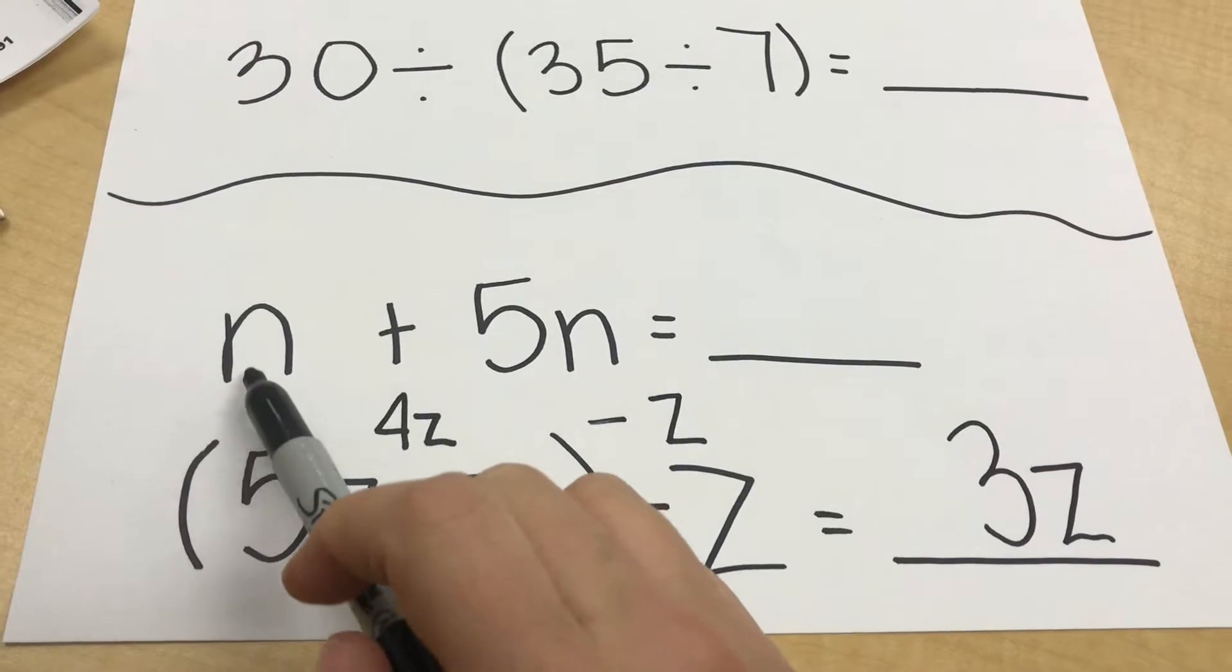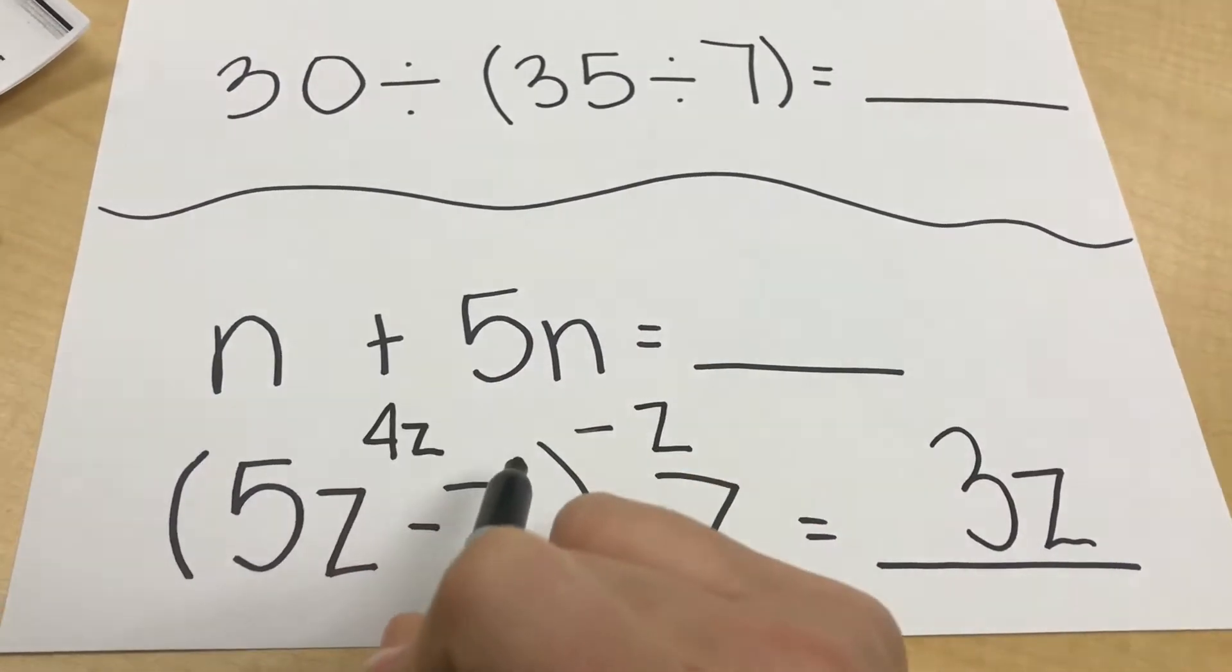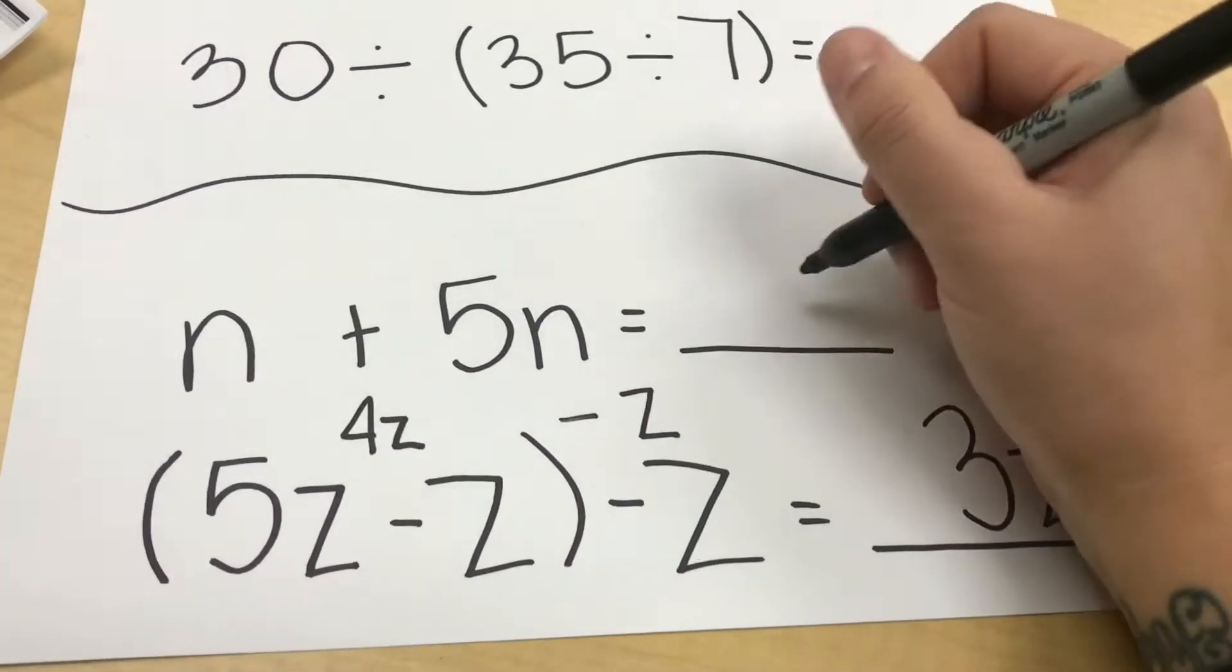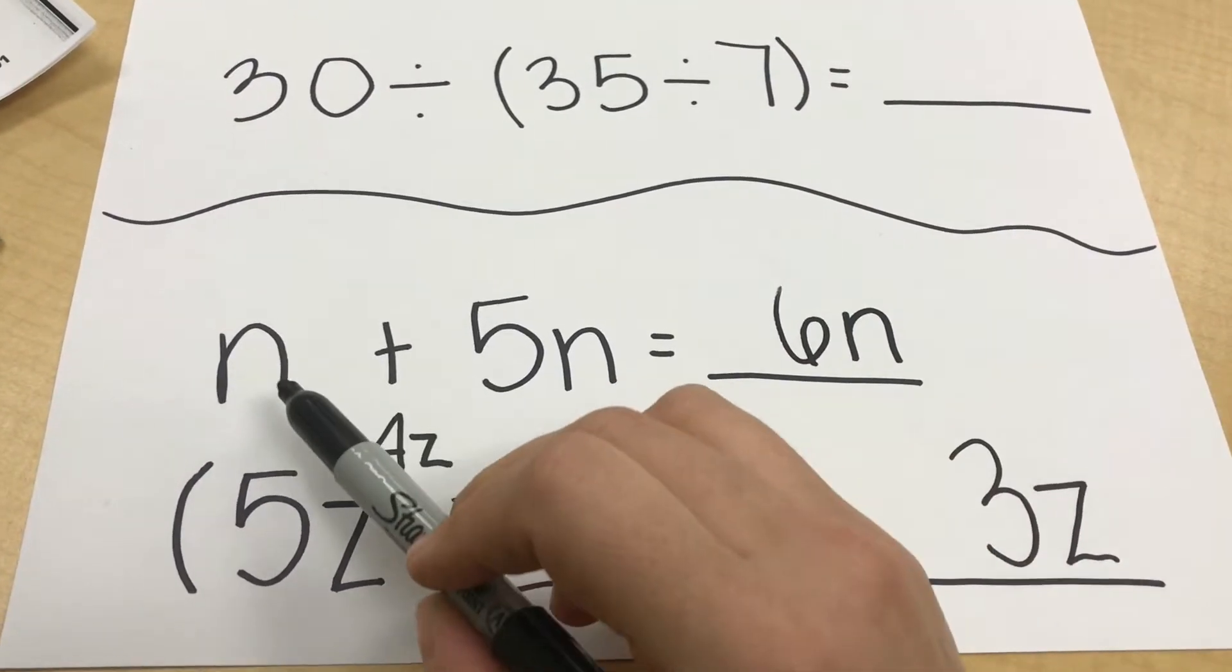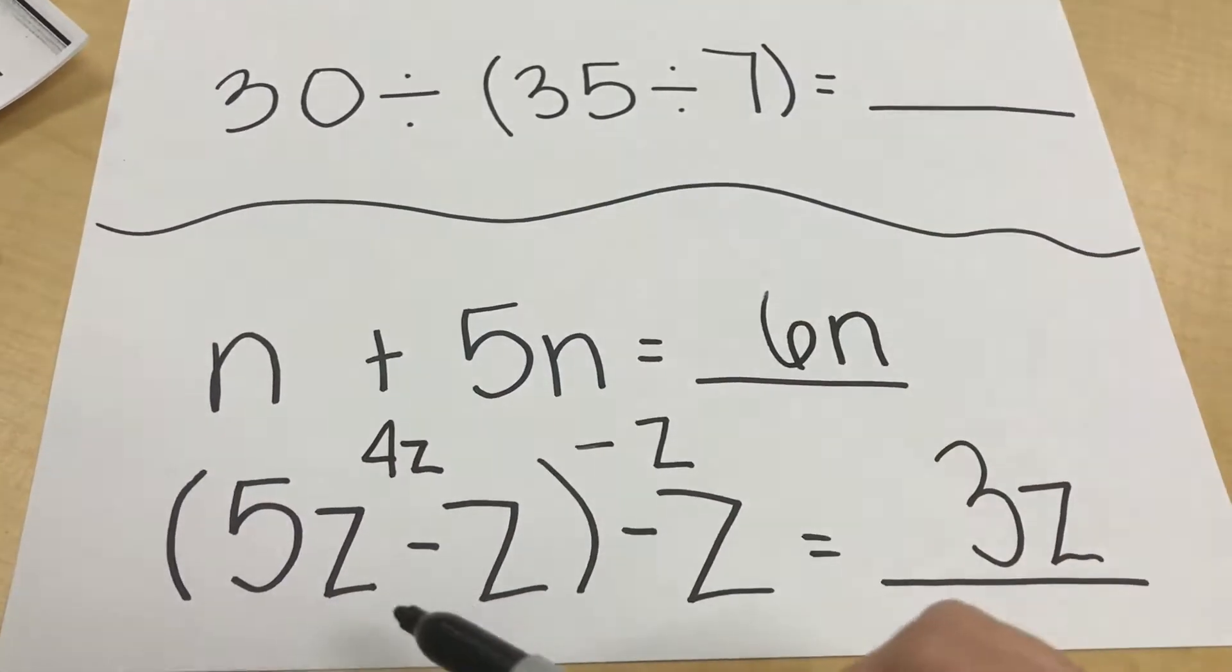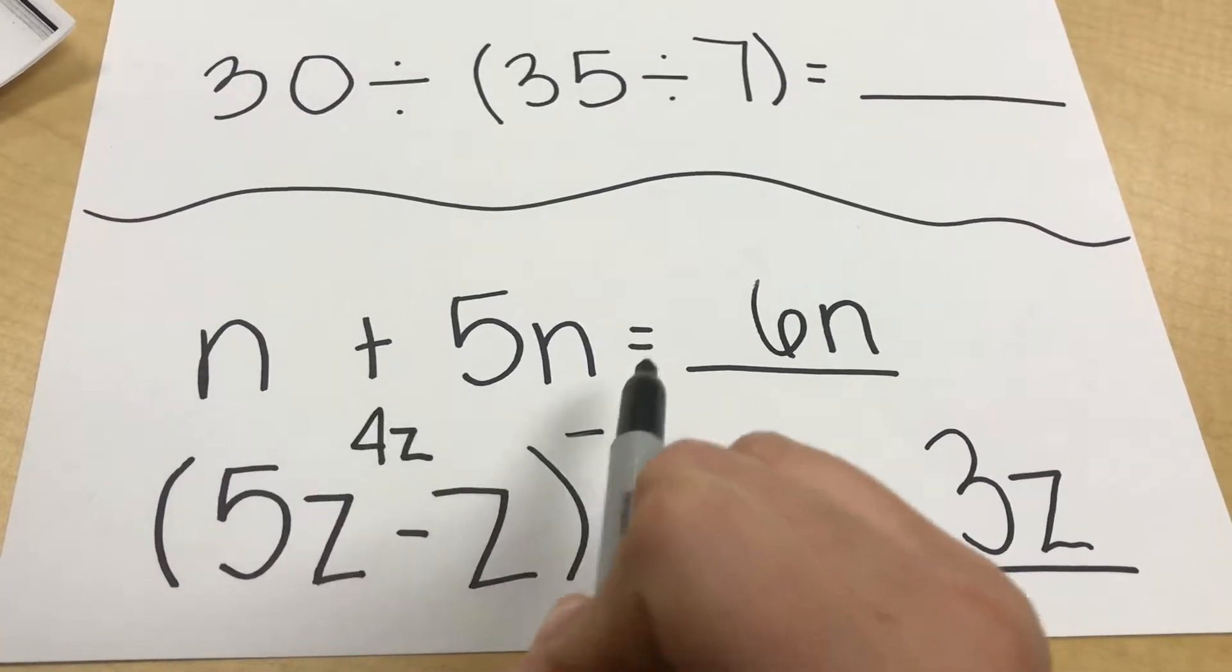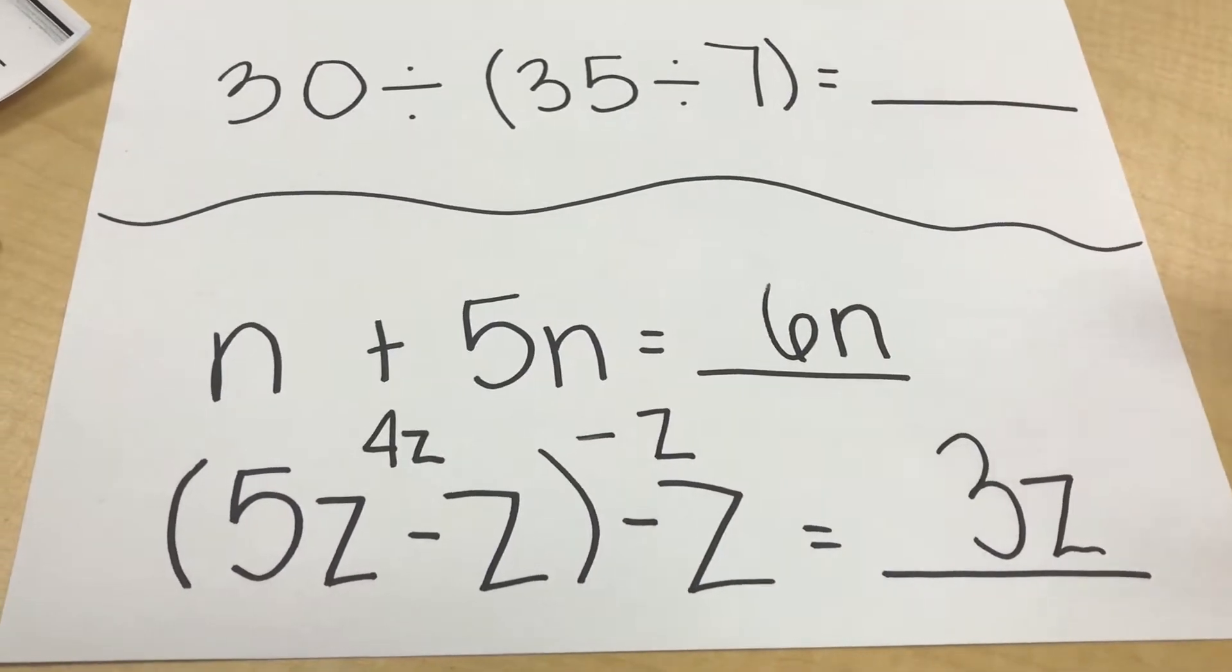And the same with this one. We have a single N by itself and then a 5N. We are adding them together. There are no parentheses, so we just go straight into addition. Now in class, sometimes what we tell the students is to not look at this like a letter, but instead call it like you're looking at nails or maybe zebras. Give the variable a name or some kind of value, so that way when they're adding them together, they know if I had 5 nails and then I had 1 nail, when I add them together, I get 6.